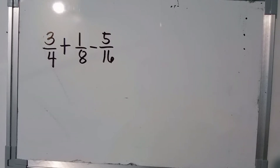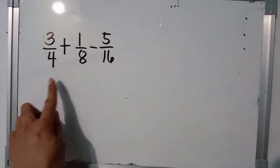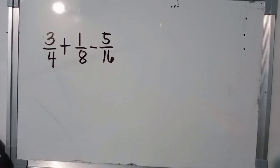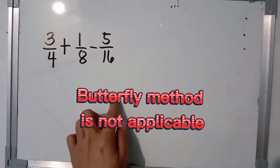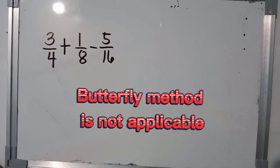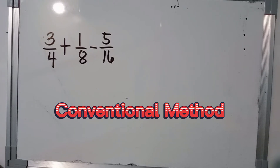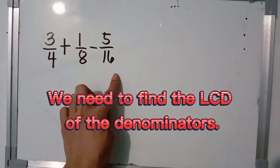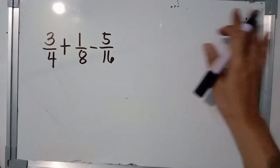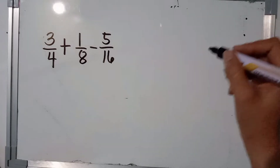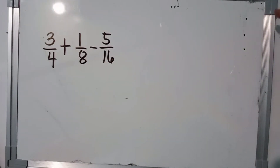Another example: 3 over 4 plus 1 over 8 minus 5 over 16. As you can see, meron na po tayong tatlong fractions. The butterfly method is not applicable here — kapag more than 2 na po ang given numbers, hindi na po applicable ang butterfly method. So, we need to apply the conventional method. Kailangan natin kunin ang LCD ng mga denominators na ito. Meron tayong iba't-ibang method: listing method at saka continuous division.